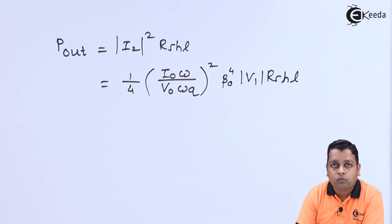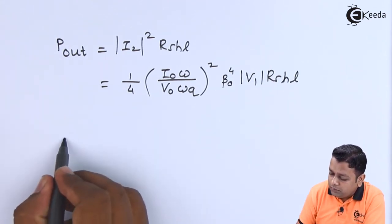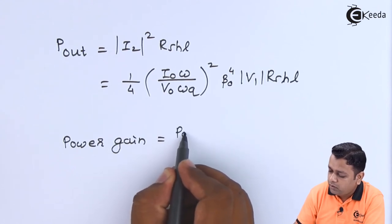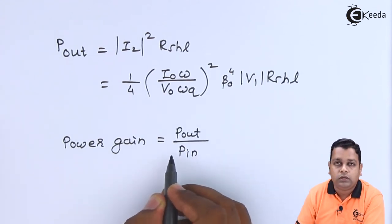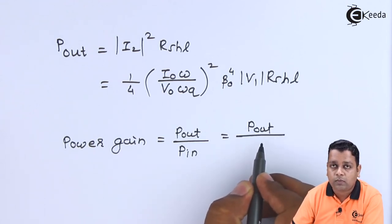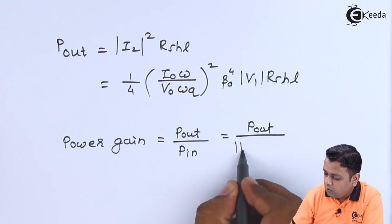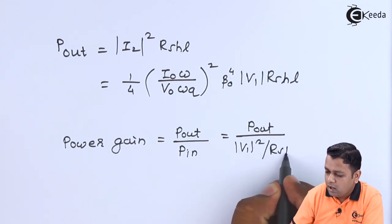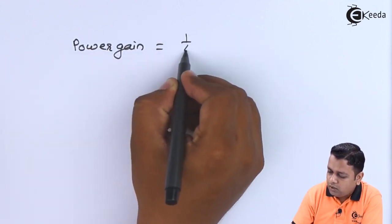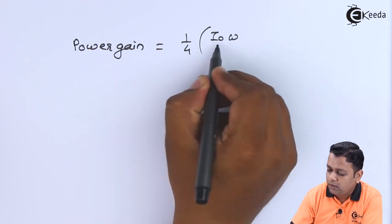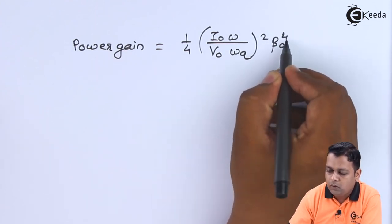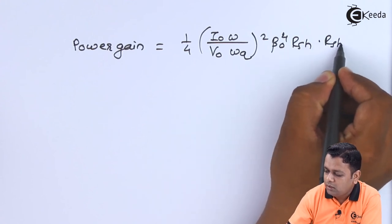Next we can also have formulation with respect to the power gain. The power gain will be given as the ratio of P_out to P_in. Therefore it will equal P_out, the above formula we can use, divided by mod of V1 squared divided by R_SH. Finally the power gain will be equal to 1/4 times the bracket I0 omega upon V0 omega_Q squared into beta_0 to the power 4 into R_SH into R_SHL.